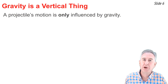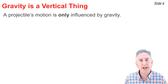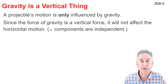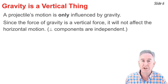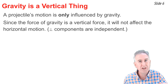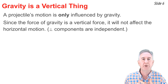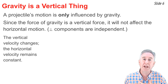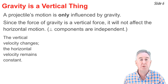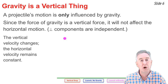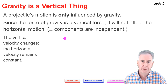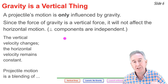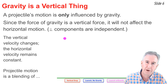Here's why this concept is so incredibly important. A projectile's motion is influenced only by the force of gravity, and the force of gravity is a vertical thing. As a vertical force, it will have no effect on the horizontal motion of a projectile, since perpendicular components of motion are independent of one another. So as a projectile moves through the air, its horizontal velocity will remain constant, but its vertical velocity will show a changing value.